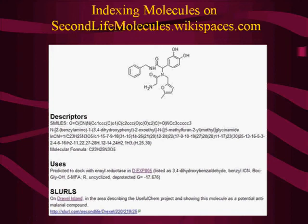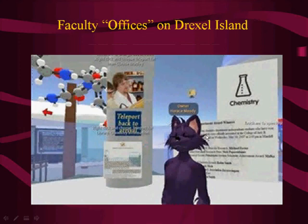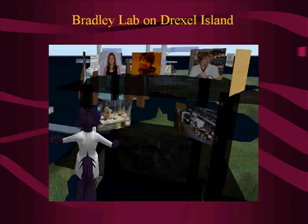With Andy, we've also made a 3D periodic table — each atom, if you click on it, shows more information about the element. This is freely available on American Chemical Society Island. We can also have virtual offices. Here's a picture of myself, and this is an area where students can visit to find out about the Drexel Chemistry Department, my lab, pictures of students, equipment, and chemicals.